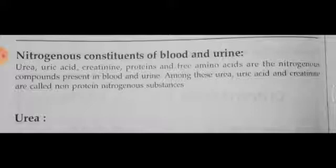Non-protein nitrogenous substances are nitrogen-containing compounds that are not protein in nature. Urea, uric acid, creatinine, proteins, and free amino acids are the nitrogenous compounds present in blood and urine. Among these, urea, uric acid, and creatinine are specifically called non-protein nitrogenous substances.